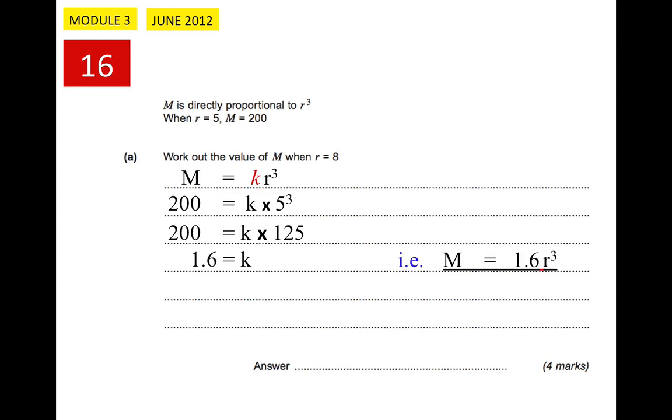So the relationship between M and r is that M is 1.6 times r cubed, because k is 1.6. Now that's all very well, but the question is to work out the value of M when r equals 8. Well, we can only do that now that we've actually worked out the relationship between M and r. So now that we know the relationship, we can work out the value of M when r equals 8.